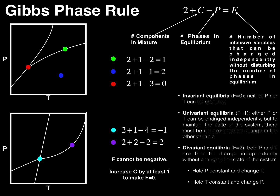F equals one is called univariant equilibria. Either P or T can be changed, but in order to maintain the number of phases in equilibrium, there has to be a corresponding change in the other variable — you change pressure, but you would also have to change temperature at the same time. F equals two is divariant equilibrium. You can change P by itself without changing T, or change T by itself without changing P — either variable is free to change independently without changing the state of the system.